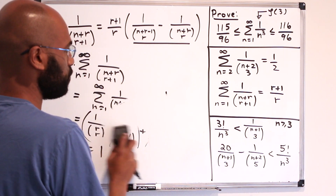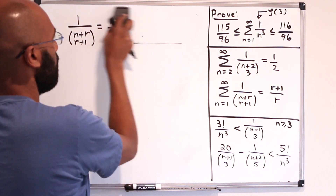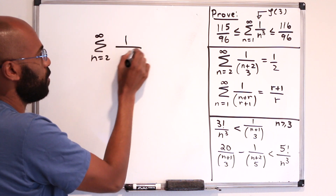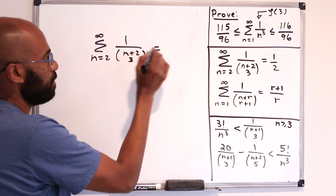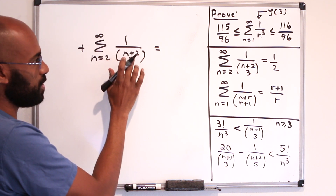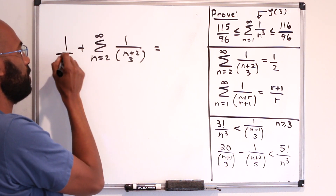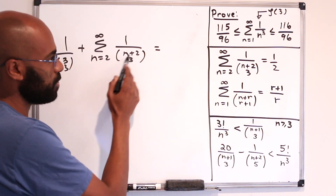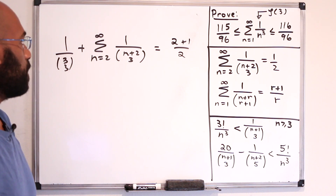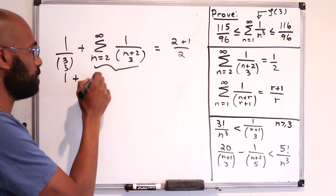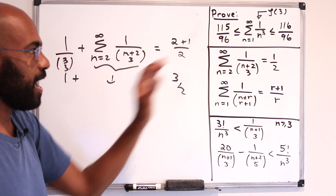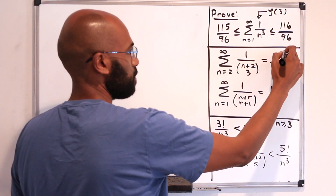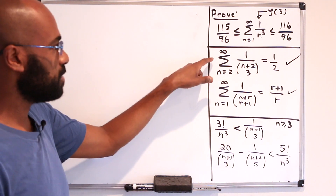In particular, the case we'll use often is r equals 2, giving the sum n equals 2 to infinity of 1 over n plus 2 choose 3. The term missing compared to starting from n equals 1 is 1 over 3 choose 3. Adding that in, with r equals 2 the full sum is 2 plus 1 over 2, which is 3 halves. So this sum plus 1 is 3 halves, meaning the sum equals 1 half. That takes care of this piece, and this sum is one we'll use quite often.